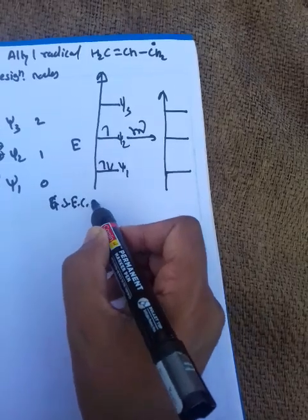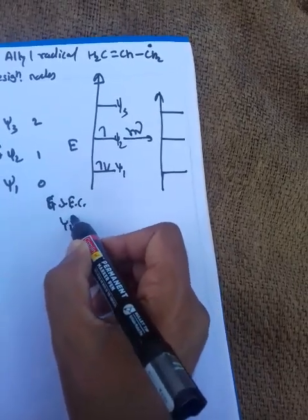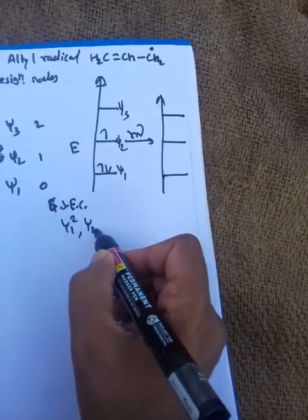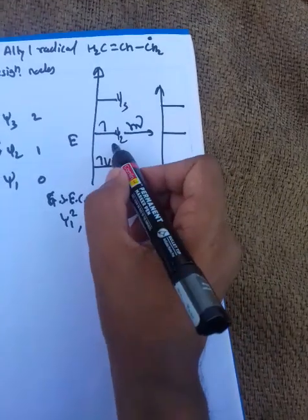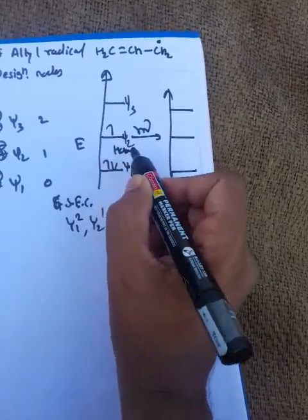The electronic configuration is psi 1², psi 2¹, psi 3⁰. So here psi 2 is HOMO and psi 3 is LUMO in the ground state.